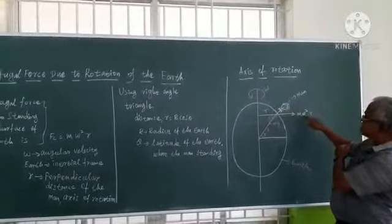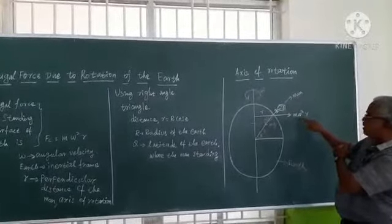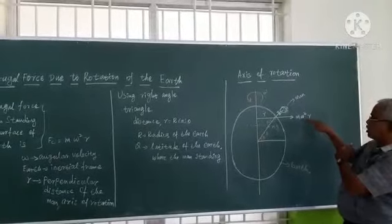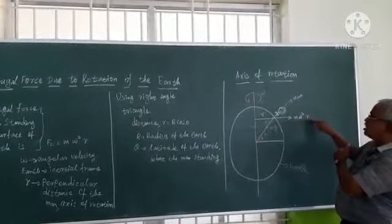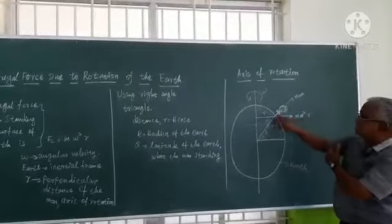Centrifugal force acts in the outward direction. The formula is m omega square r, where v equals r omega, giving m omega square r as the centrifugal force in the outward direction.